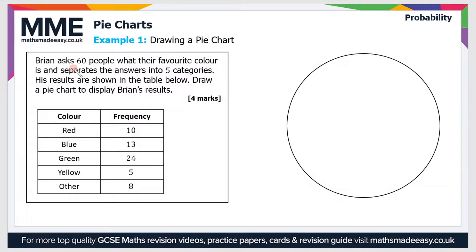Well first of all there's 60 people that he's asked. So let's work out what angle is represented by one person. To do that we know there's 360 degrees in a circle and he asked 60 people. So 360 divided by 60 equals 6 degrees. So that's one person.